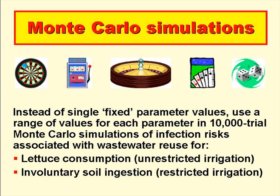In work done in Leeds with colleagues from the London School of Hygiene and Tropical Medicine, we considered both restricted and unrestricted irrigation. Restricted irrigation refers to irrigation of all crops except salad crops and vegetables that may be eaten uncooked, such as cabbage, carrots, and onions. Unrestricted irrigation is used for everything, including salad crops and vegetables that may be eaten uncooked. We used two exposure scenarios: lettuce consumption for unrestricted irrigation — a scenario developed in the mid-1990s by Professor Shuval of the Hebrew University of Jerusalem, extended to include a root crop, onions — and for restricted irrigation, we developed the scenario of involuntary soil ingestion.